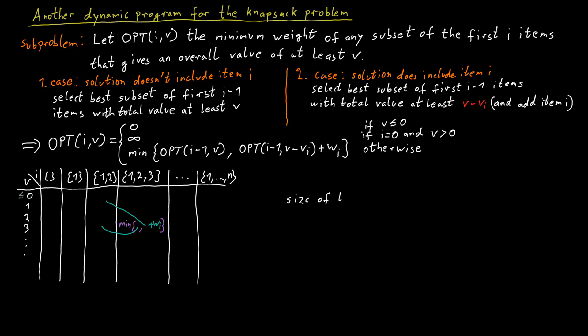How many cells are there in this table? The table has n plus one many columns, so order of n. And how many rows does this table have? It's every possible value we could achieve. Essentially, the sum of all the values of all the items, that would be if we had to pack all the items together, that is the value we could get. We couldn't get above that. So that's at most how many rows of the table we need.